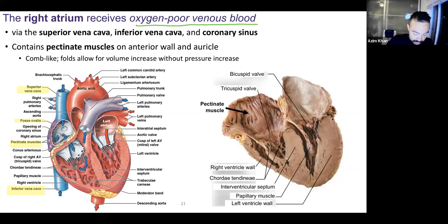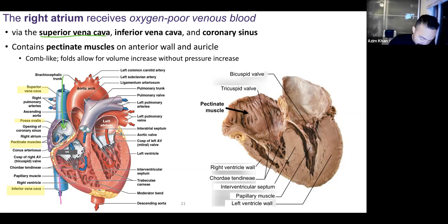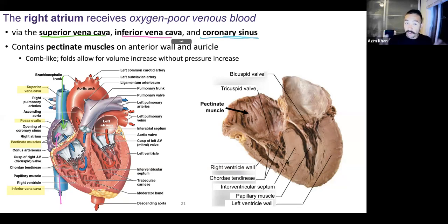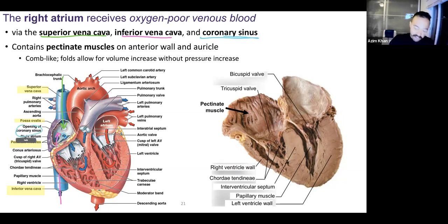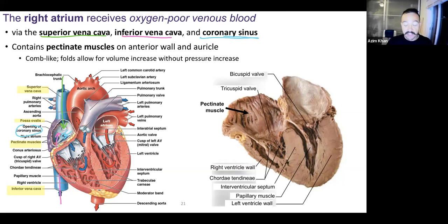There are three different veins that the right atrium is receiving blood from: the superior vena cava, coming in from above; the inferior vena cava, coming up from behind; and the third place where blood is coming in from is the coronary sinus. The three places we receive oxygen-poor blood from to the right atrium are the superior vena cava, inferior vena cava, and coronary sinus.